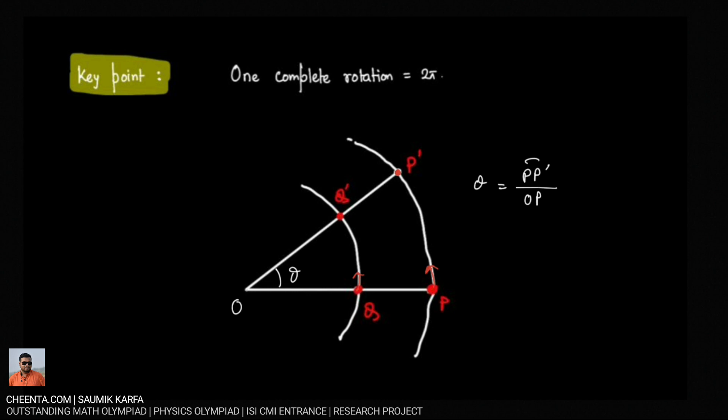Now on this radius OP, any point is moving that same amount because if we measure the angle here also, if Q is a point on that same radius then the movement of Q will be here which is Q prime. So the angle will be QQ prime arc length over OQ and these two ratios will be same. So in that way the angle stays same.